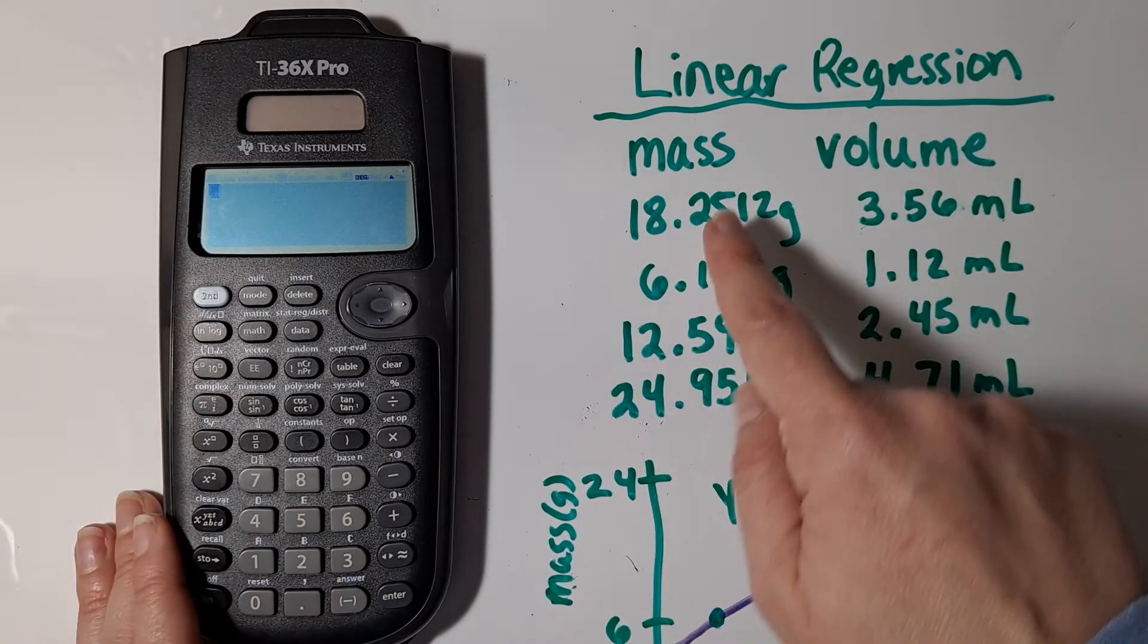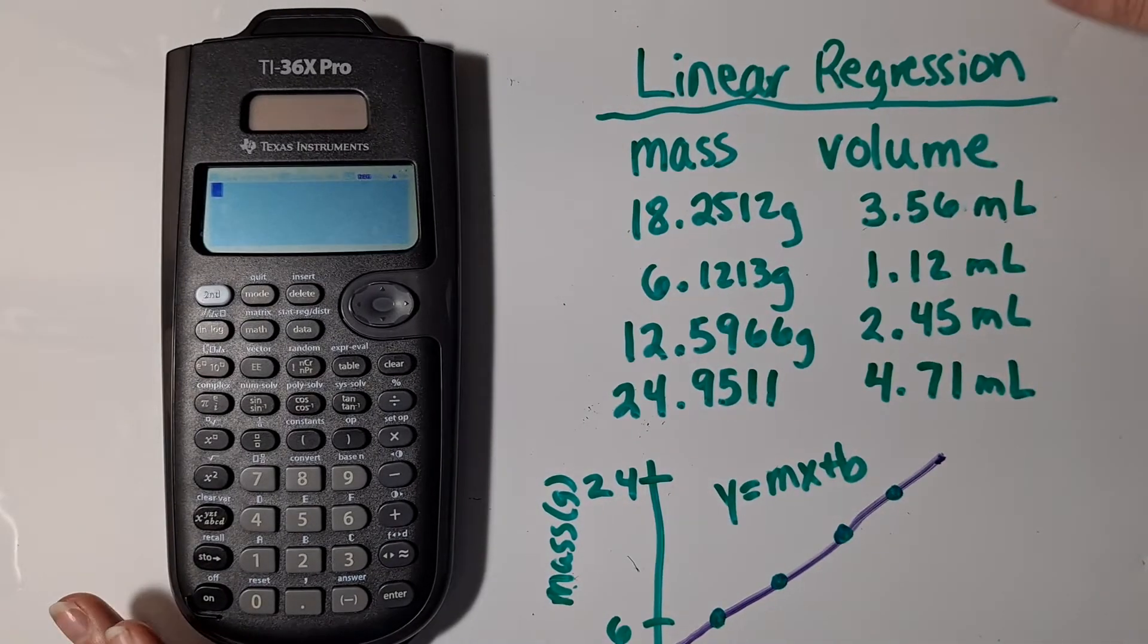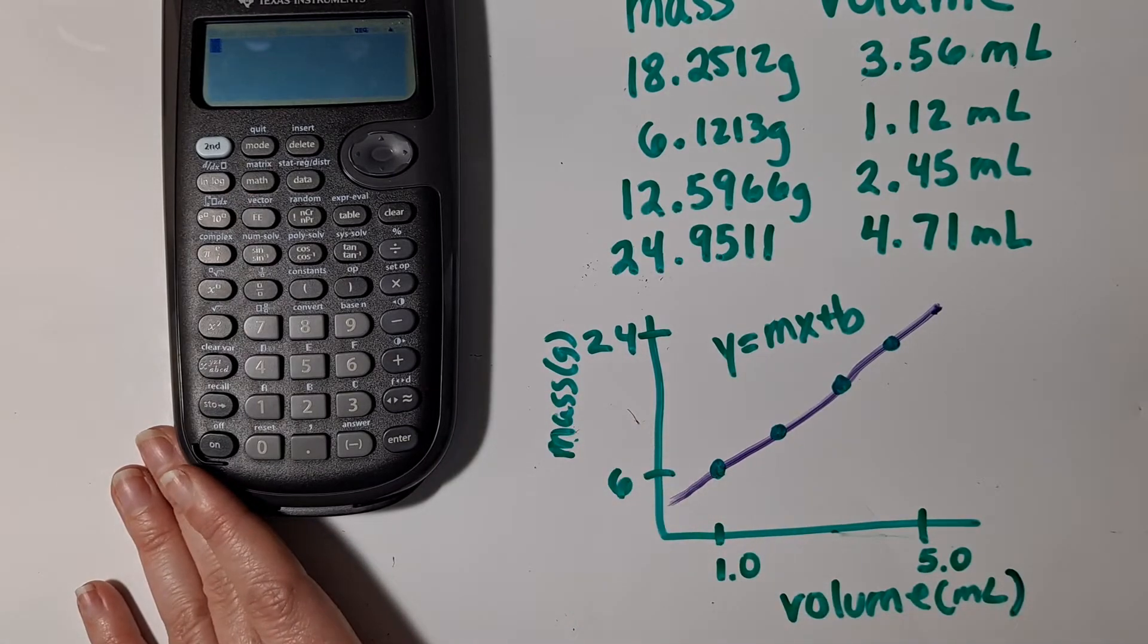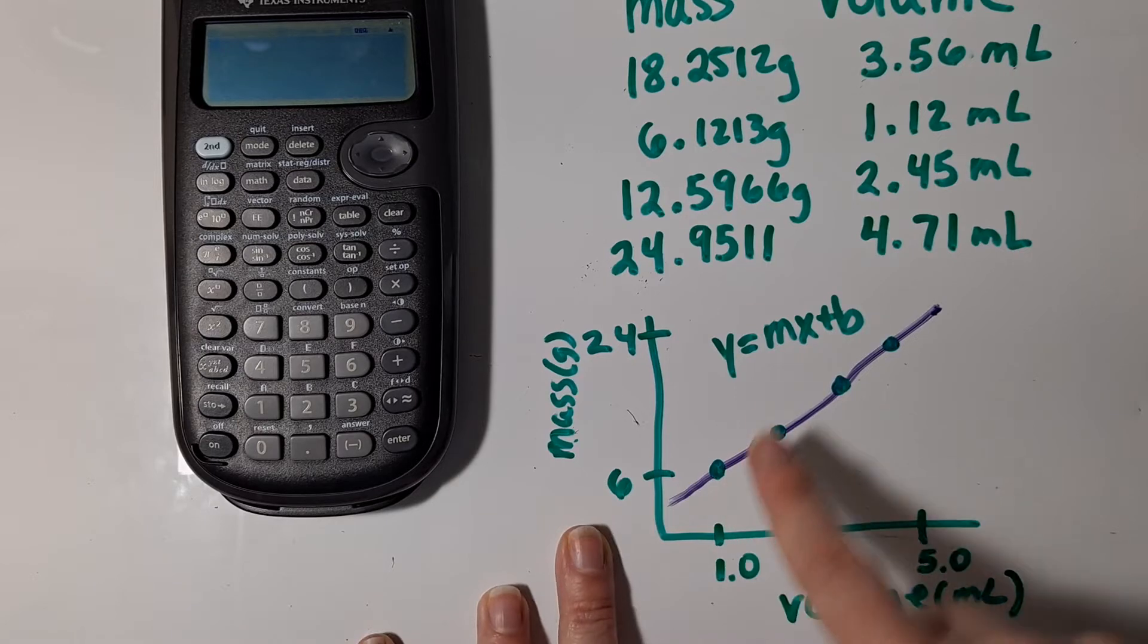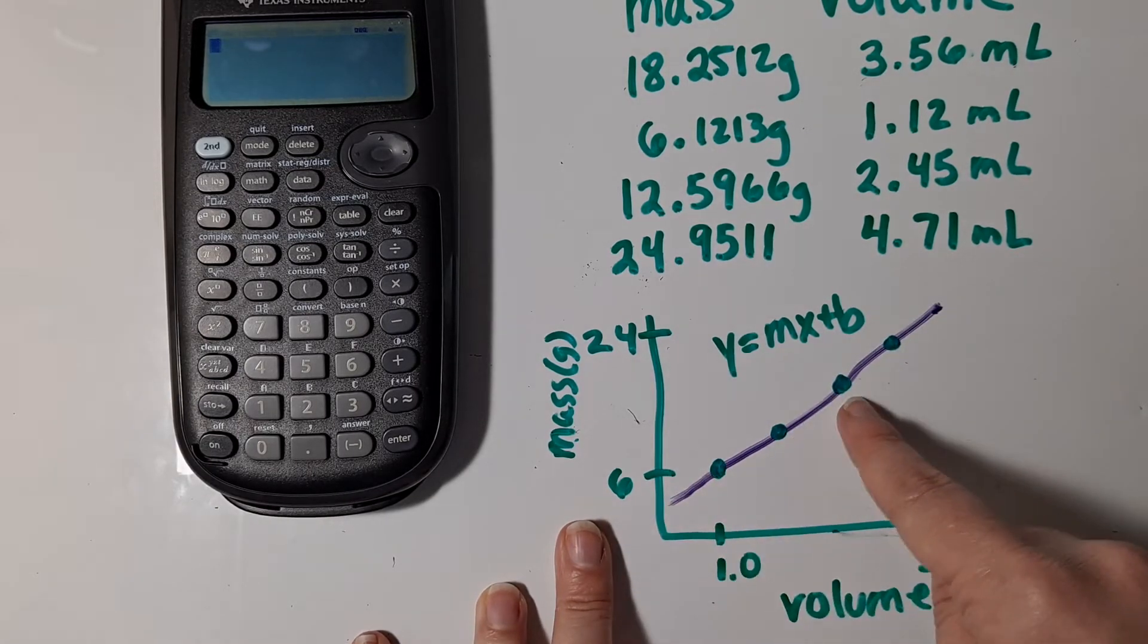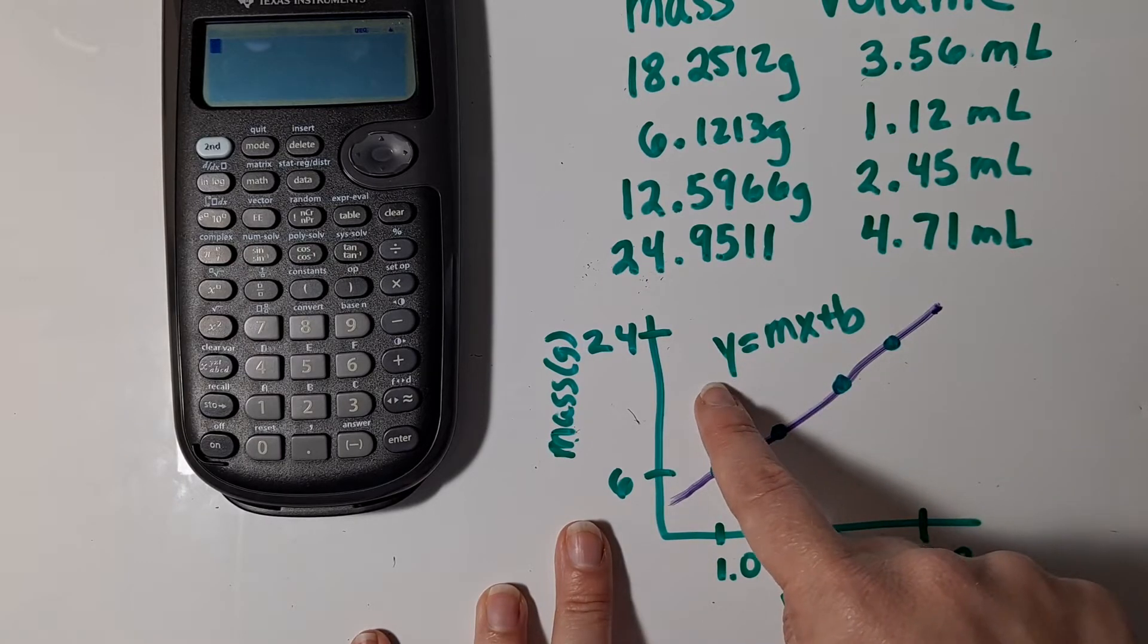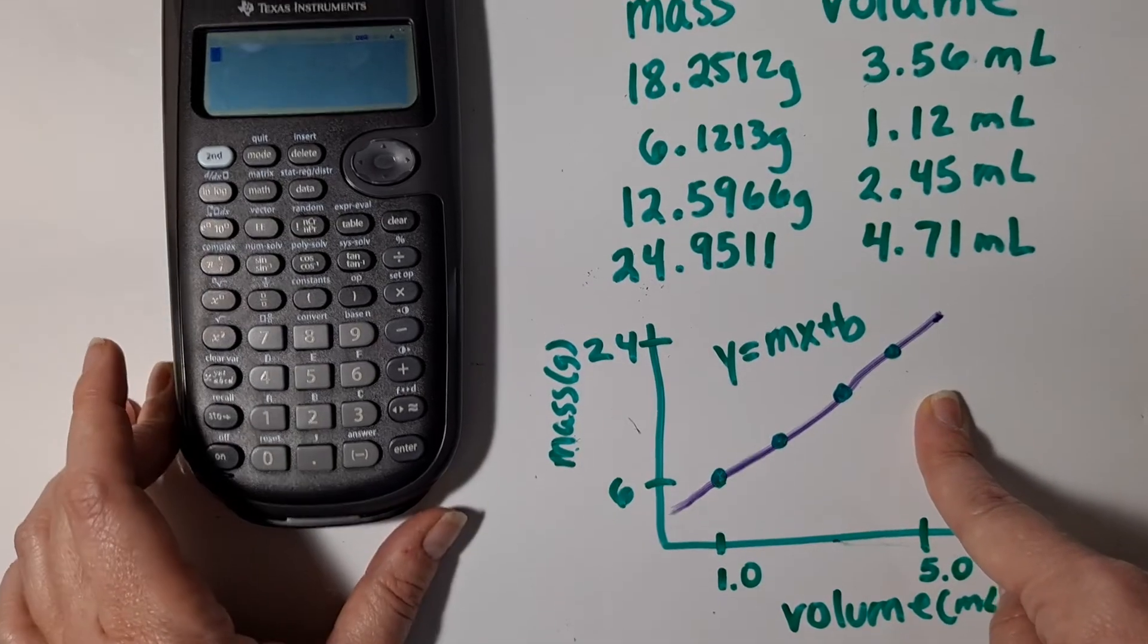Here I show a set of masses and a set of volumes, and if I was going to graph these masses and volumes using a spreadsheet program or graphing calculator, it would show me that these data points appear in a line. And so I can use my calculator to tell me what the equation for that trend line should be.